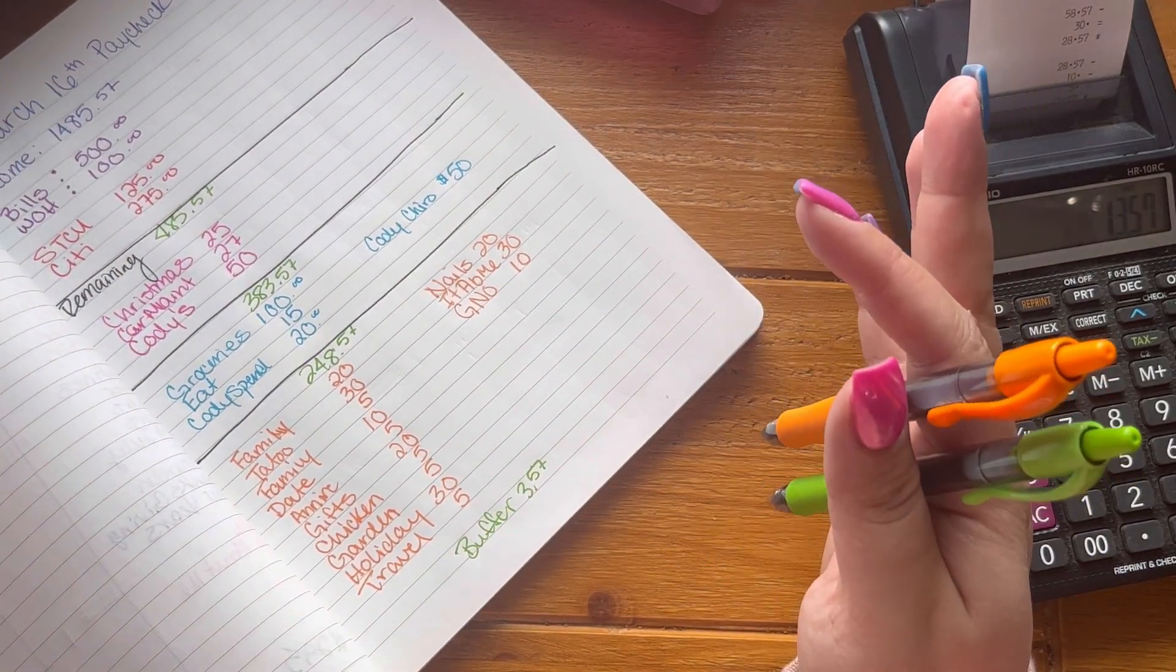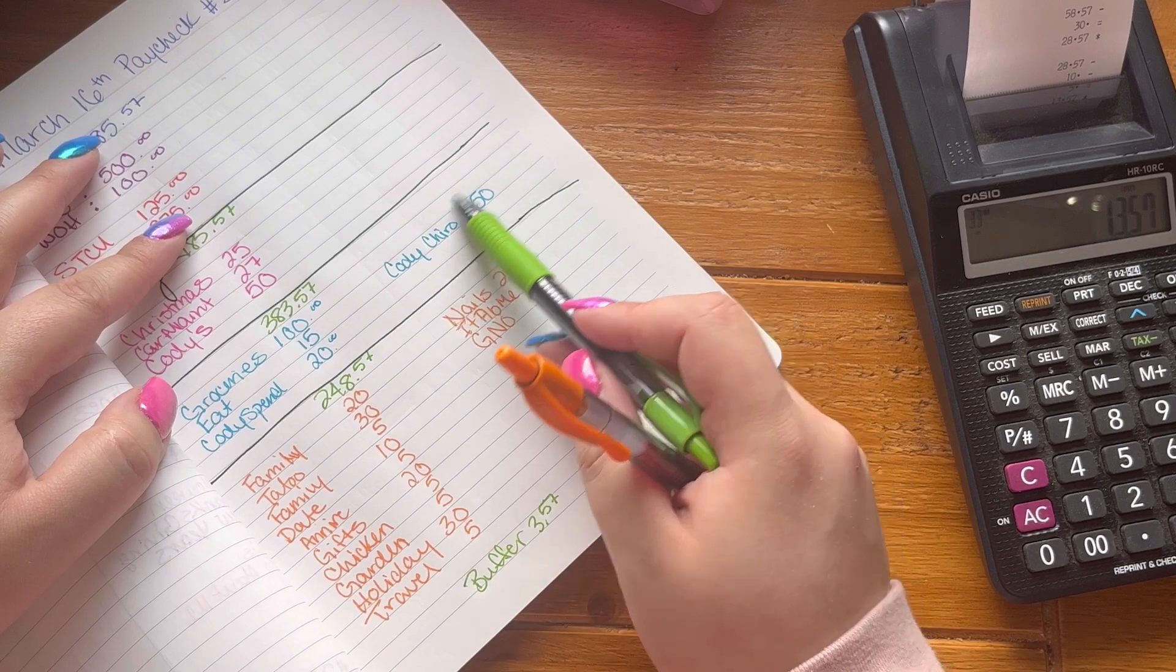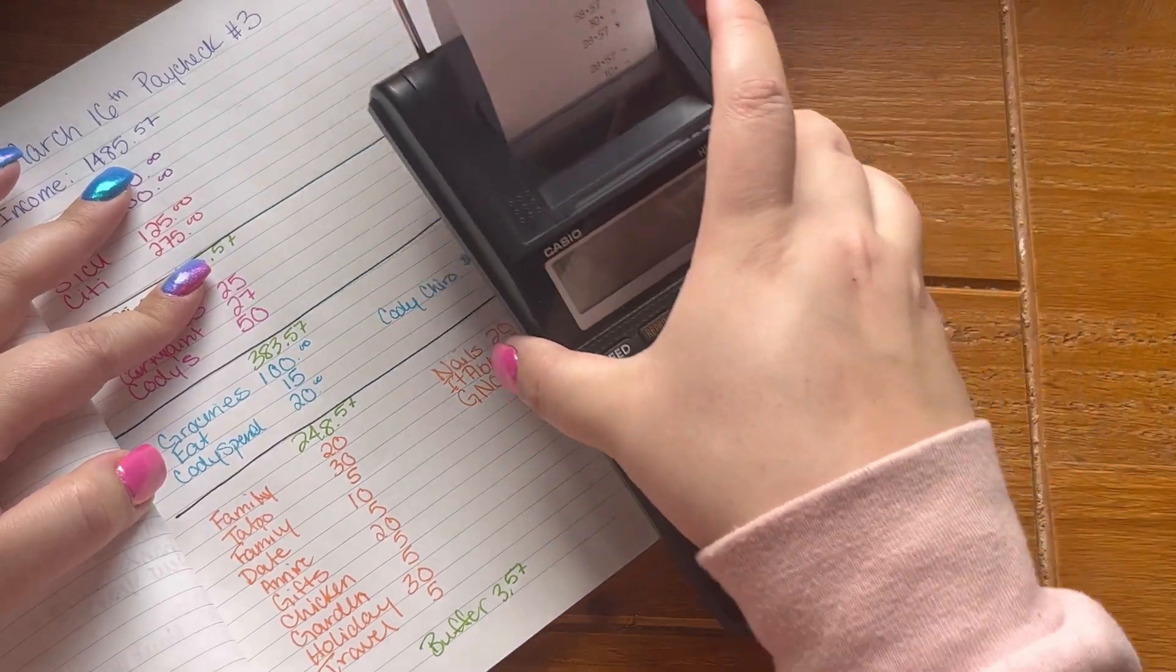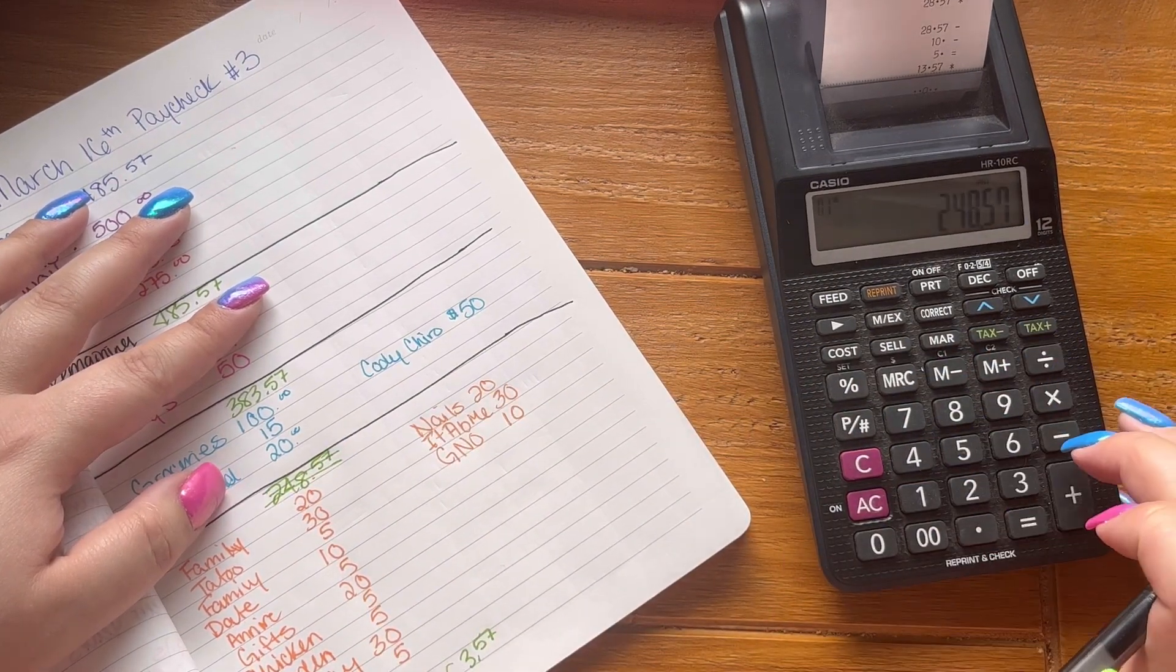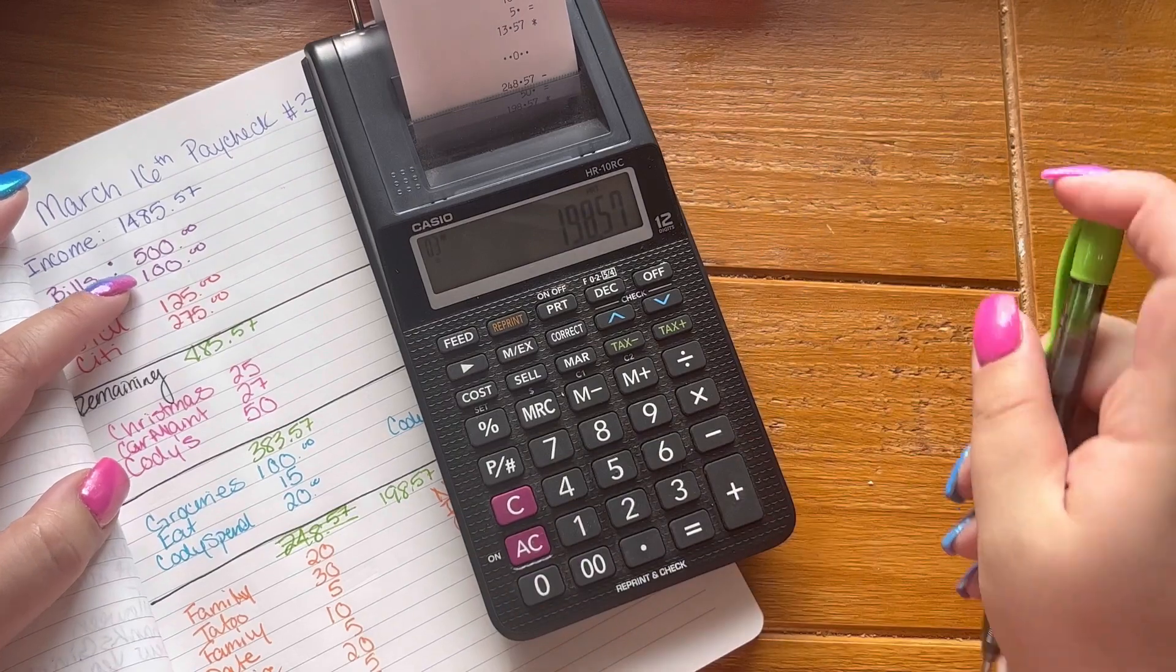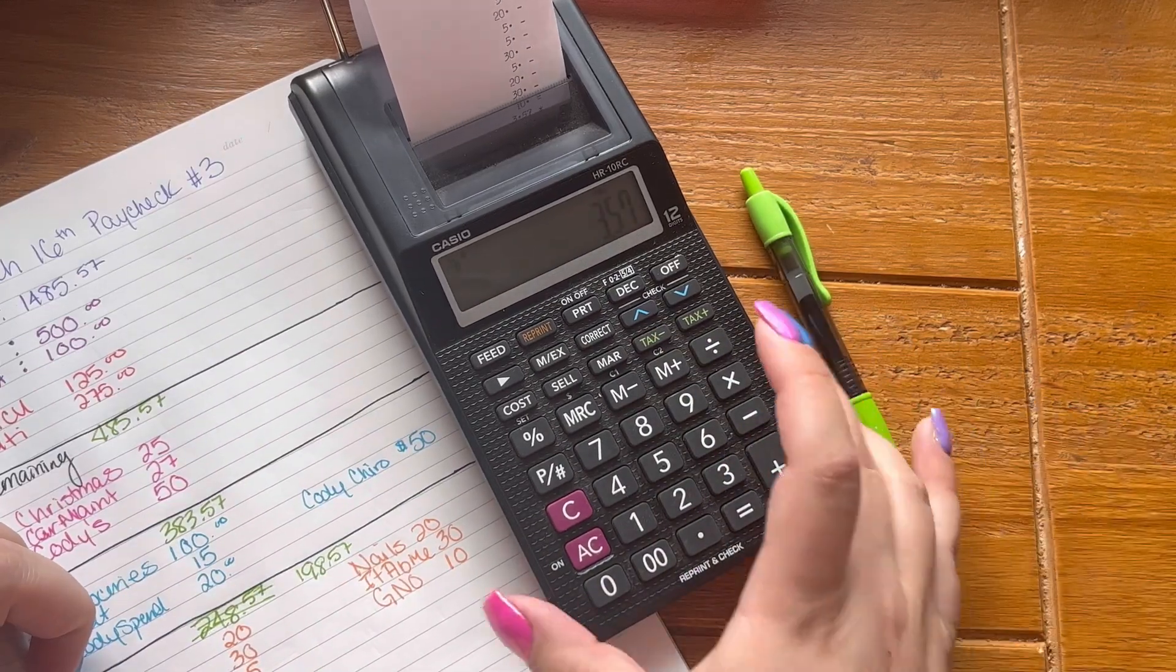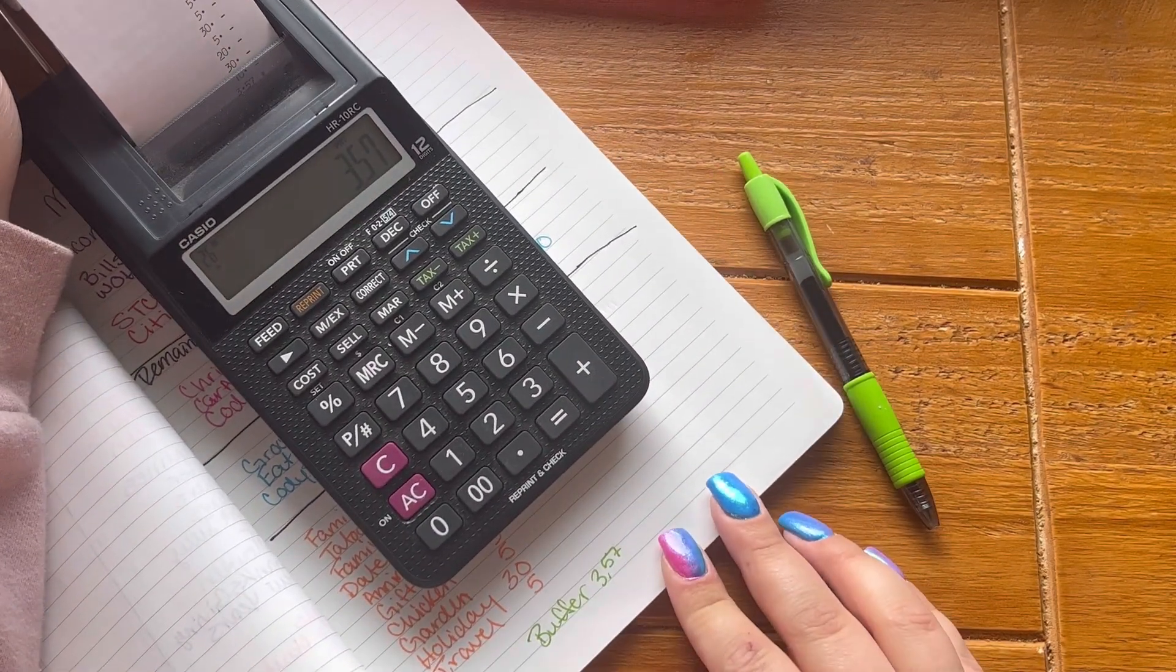With Cody's chiropractic, if his doesn't end up being this much, I will probably take this money and put it towards his haircut, which he needs a haircut in two weeks when he goes to class next. So let's just add all this up and I will adjust this to be $50 less. $98.57. So let's do some quick math and make sure everything adds up. Beautiful. So everything minus that gives us our buffer $3.57.